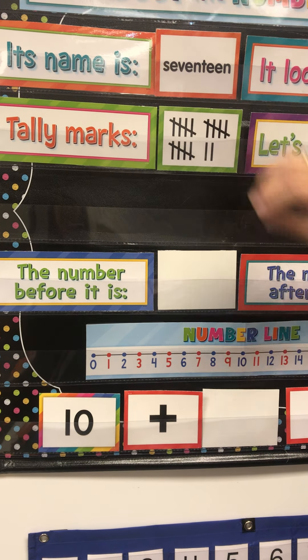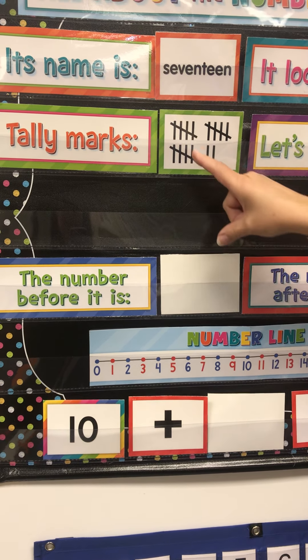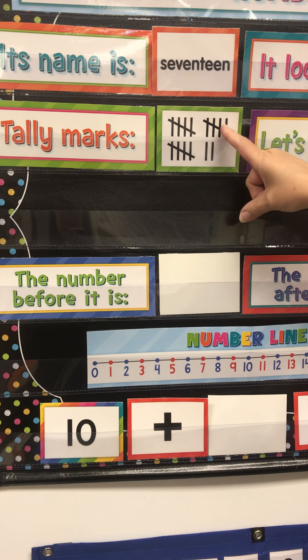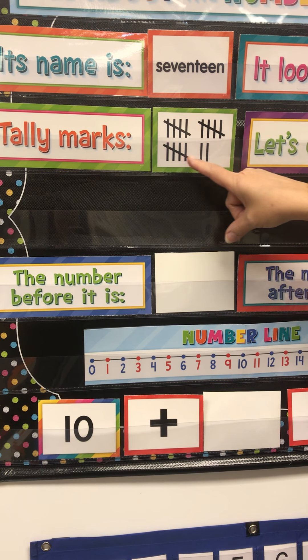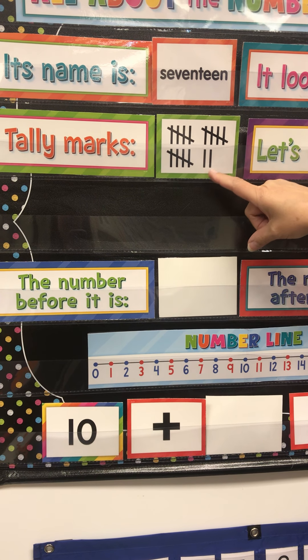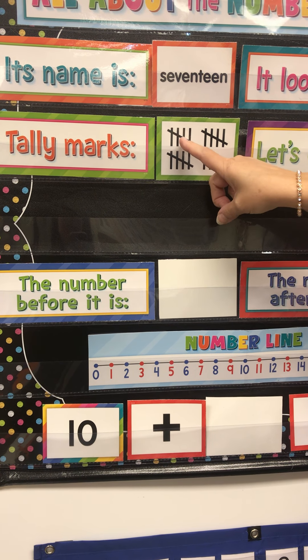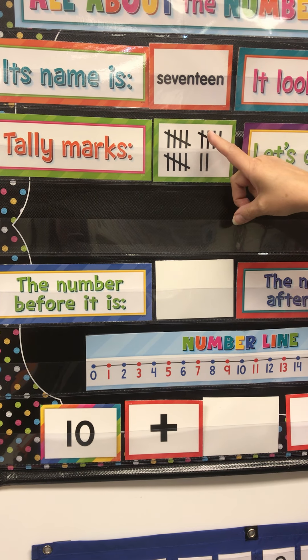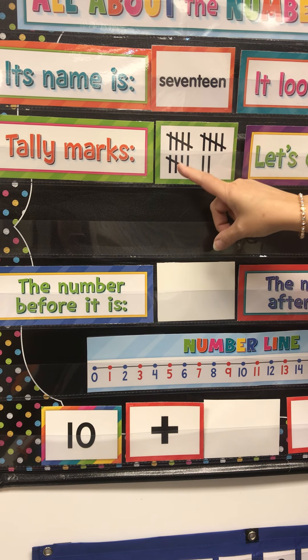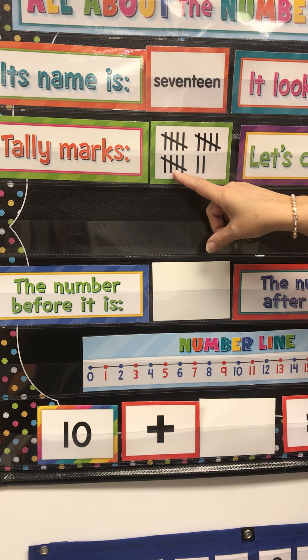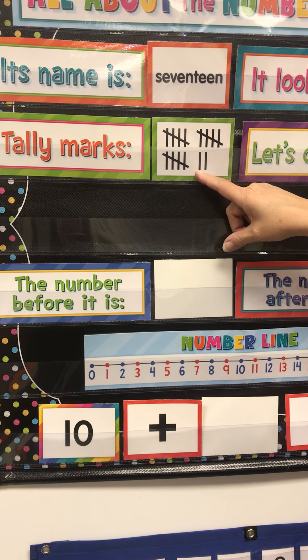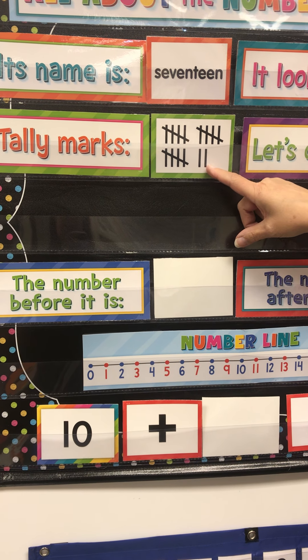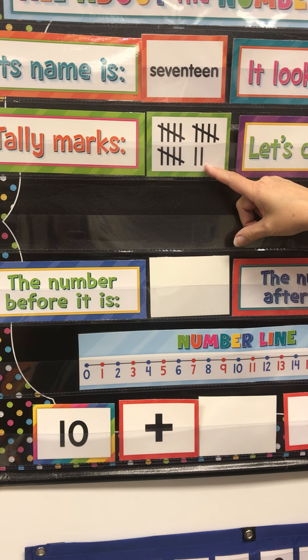When we have our tally marks, we have three groups of five and two more. Five, ten, fifteen, sixteen, seventeen.